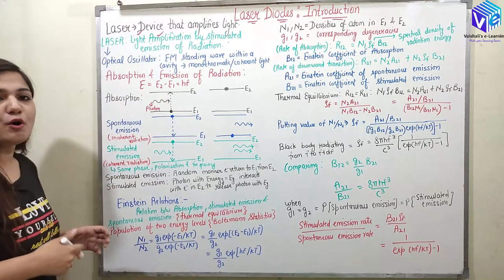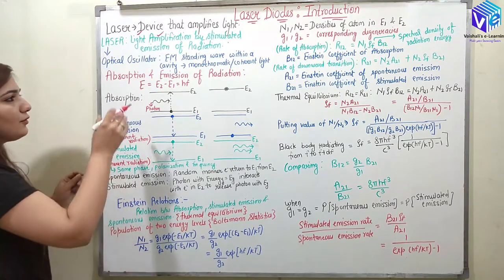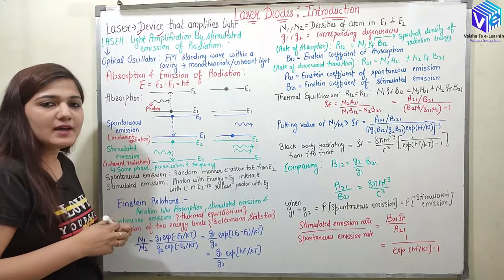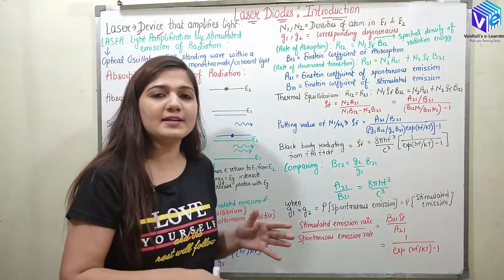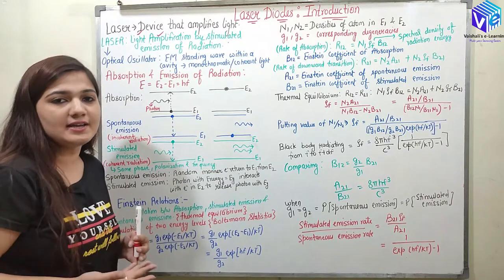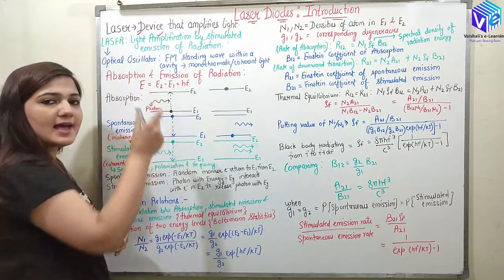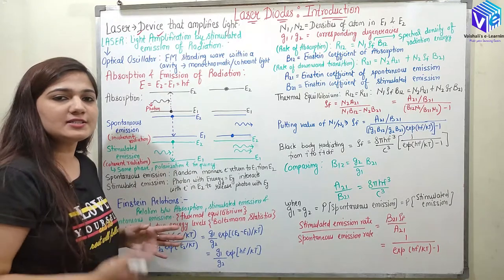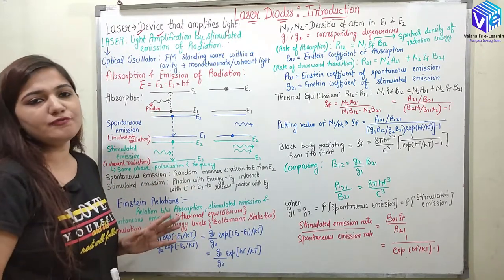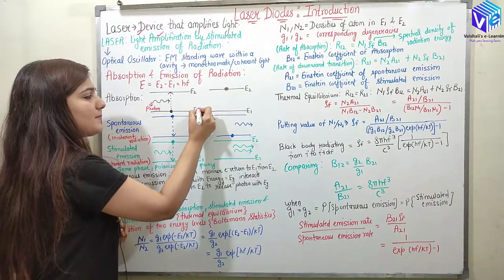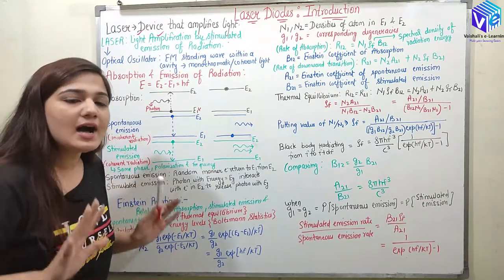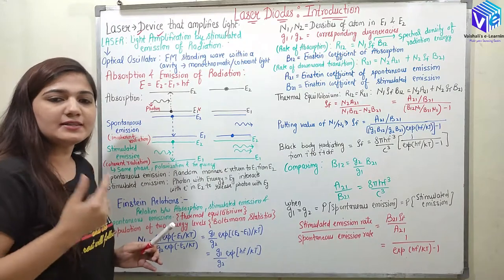Now we have different types of events occurring: absorption or emission of radiation. All electrons will be concentrated in the lower energy and the higher energy state. E1 would be the lower energy state and E2 would be the excited or higher energy state. Whenever we have absorption, the electron from the lower energy state moves to the higher energy state, and during emission, the electron from the higher energy state moves to the lower energy state. The value of E2 is greater than the value of E1.